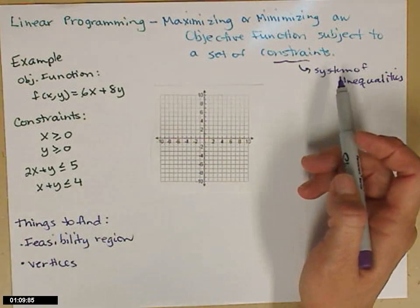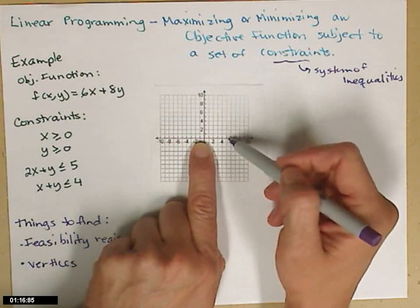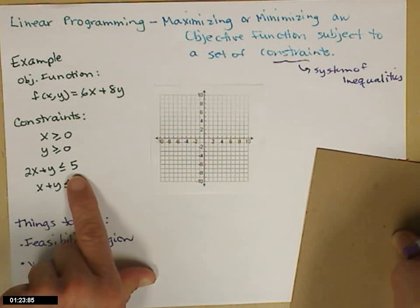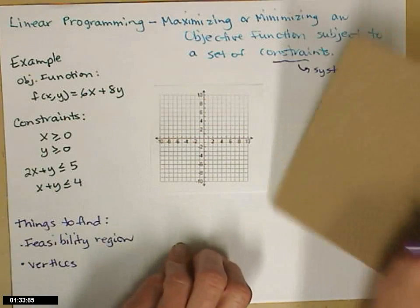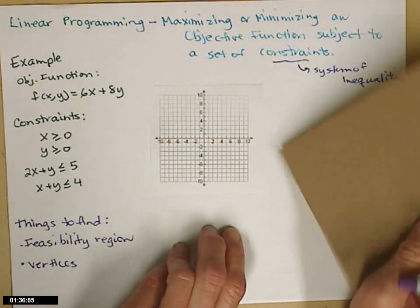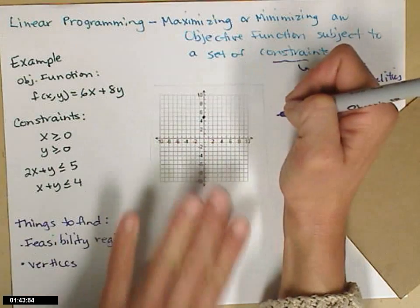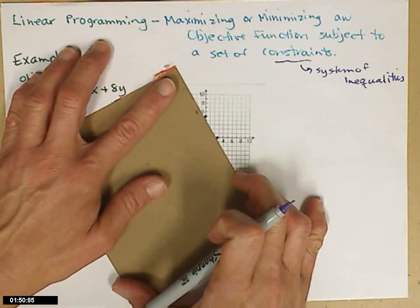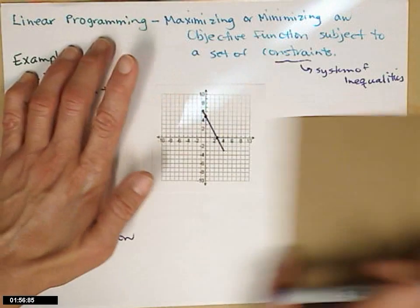This was the only graph paper I had. Those first two constraints keep me in quadrant one. So now let's graph the second two. For 2x + y ≤ 5, we think of that as an equal sign first and then go back and think about the inequality symbol later. I need my y-intercept to be 5, and my x-intercept — if y is zero, x would be five halves, so two and a half. That would be right about here. I'll put my straight edge there and connect those two points. I just need it here in the first quadrant.